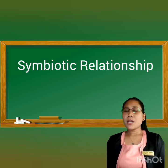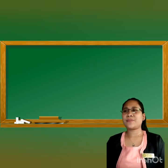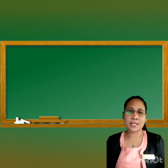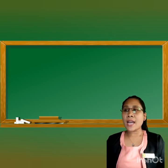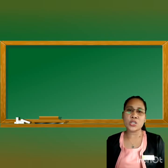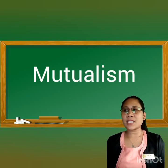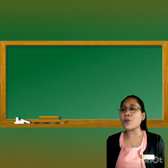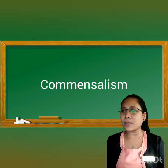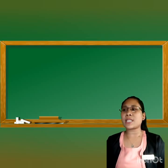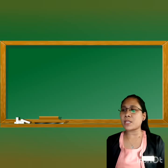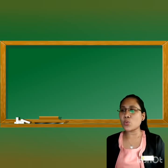Now we are going to symbiotic relationships. What is symbiosis? Symbiosis is a close relationship between two species in which at least one species benefits. There are three kinds of symbiotic relationships: mutualism, a symbiotic relationship in which both species benefit; commensalism, a symbiotic relationship in which one species benefits while the other is not affected; and parasitism, a symbiotic relationship in which one species — the parasite — benefits while the other is harmed.